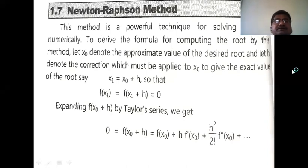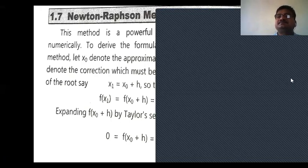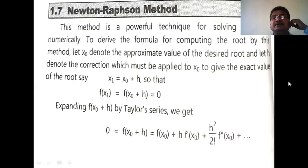Today the topic for discussion is the Newton-Raphson method. This method is useful to find the approximate root of transcendental equations and algebraic equations. Algebraic equations are of the type x³ + 2x² + 3x = 0. If the equation is of the form x·sinx + eˣ = 0, that is a transcendental equation. This method is useful to find the root of both types.